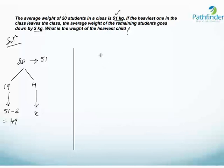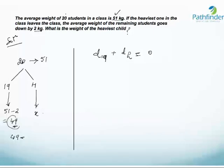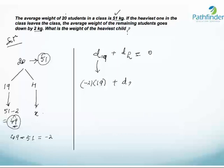Our basic equation is: deviation on 19 students plus deviation of the heaviest student must equal zero. The deviation on each of the 19 students is 49 minus 51, which gives minus 2. Because there are 19 students, the overall deviation on 19 students is minus 2 into 19, giving minus 38. Therefore, the deviation on the heaviest student must be plus 38.